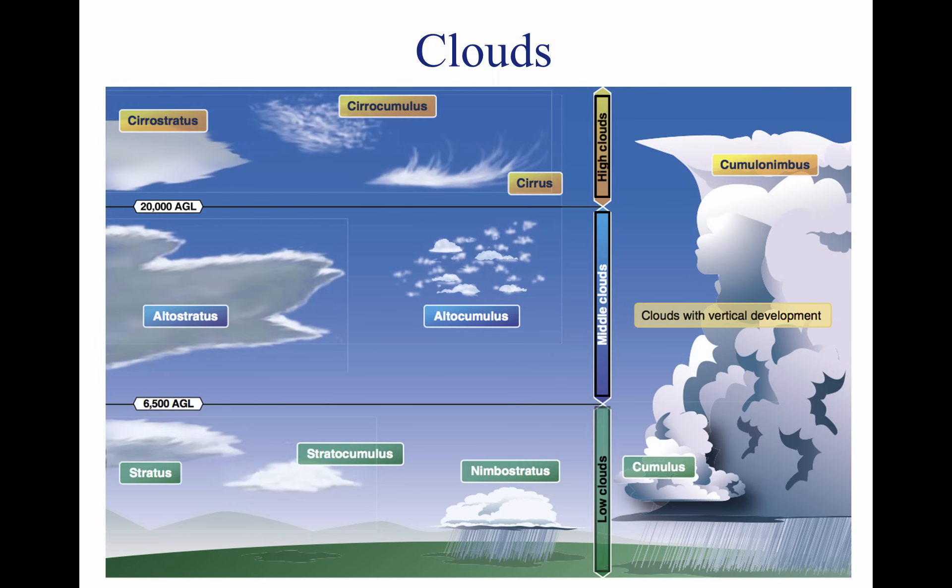Low clouds are those that form near the Earth's surface and extend up to 6,500 feet AGL. They are made primarily of water droplets but can include supercooled water droplets that induce hazardous aircraft icing. Typical low clouds are stratus, stratocumulus, and nimbostratus. Fog is also classified as a type of low cloud formation. Clouds in this family create low ceilings, hamper visibility, and can change rapidly.